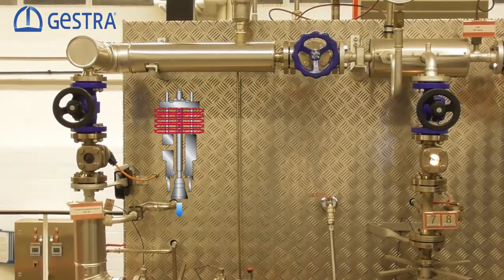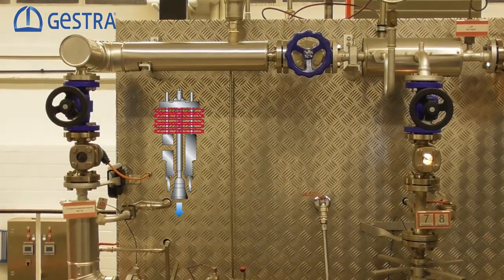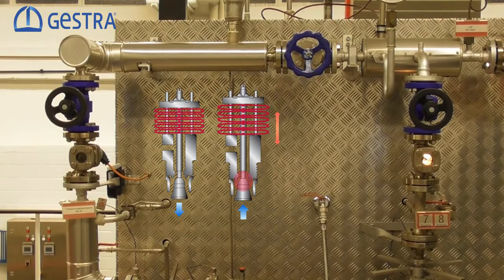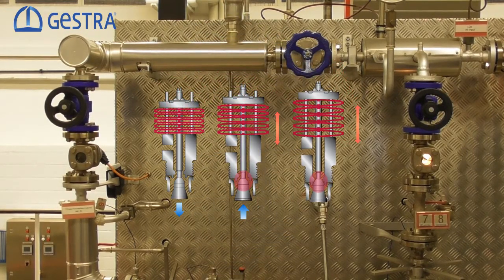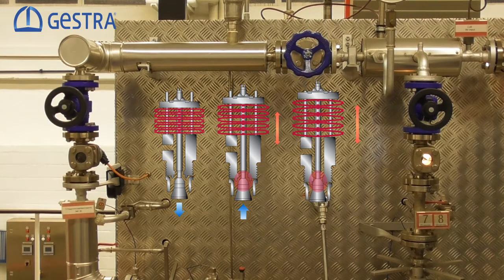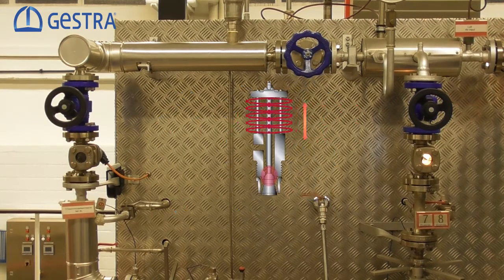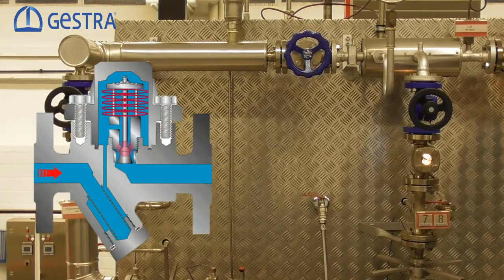Specially shaped bimetallic plates arranged one above the other expand as the media temperature rises, which are finally moving the mounted stage nozzle within the regulator. The flow orifice will shut as soon as we come close to saturation temperature. Now the pipeline is drained and the BK stays closed.